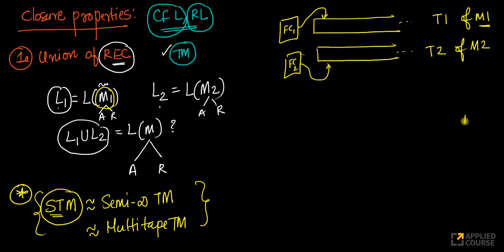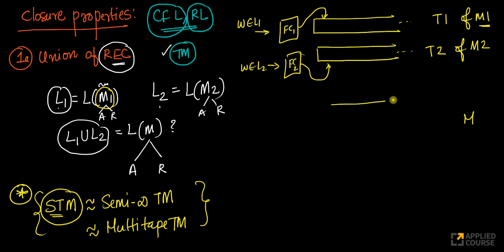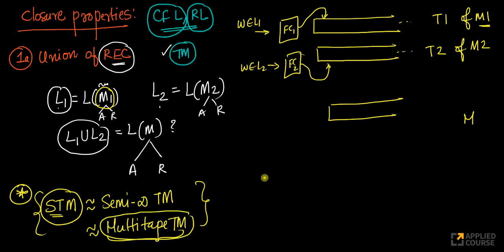I want to construct machine M. These machines, if given a word W belonging to L1 or L2, only have two possibilities: accept or reject. I'll construct M as a multi-tape Turing machine. Suppose the input ABC is on tape 1. I will also have tape 2. The first step is to copy the input word from T1 to T2.